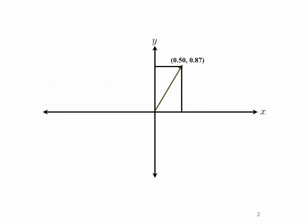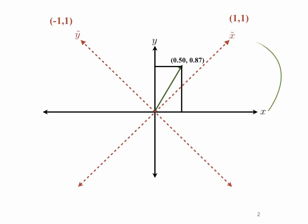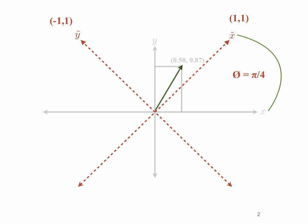Consider this vector in the xy plane. It has coordinates 0.5 along the x and 0.87 along the y. Now if we rotate our coordinate system by pi over 4, looking at the red dashed lines, we see that we have not changed the vector at all. Writing now in terms of these new coordinates — x-tilde in the positive direction and y-tilde in the positive direction — our vector has coordinates 0.69 and 0.19 in terms of the x-tilde and y-tilde coordinate system.